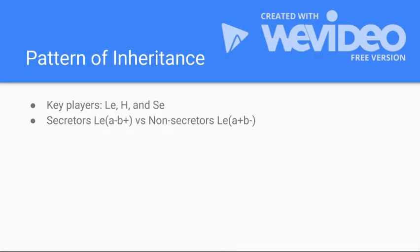Let's break down the Lewis A and Lewis B inheritance into simple terms. When we're talking about Lewis A being expressed over Lewis B, either the secretor gene, H gene, or both will be amorphs. Lewis A is like, 'I'm Mr. Independent. I don't need you, but if you want to come with me, only one of you can come.' So we're going to label this individual as a non-secretor, and what this means is that Lewis A will be the only antigen expressed in the secretion and on the red cell.